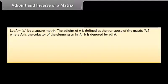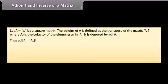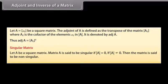Adjoint of a matrix: The adjoint of A is defined as the transpose of the matrix of cofactors aij, denoted as adj(A). Singular matrix: A square matrix A is said to be singular if det(A) = 0. If det(A) ≠ 0, then the matrix is said to be non-singular.